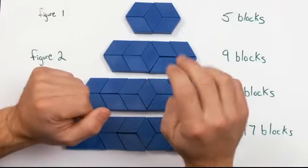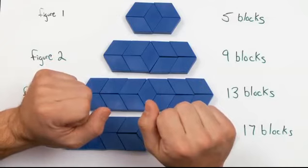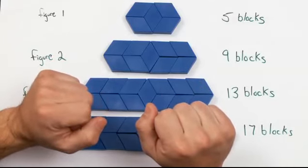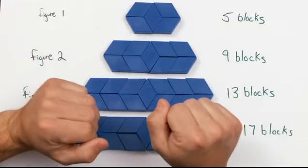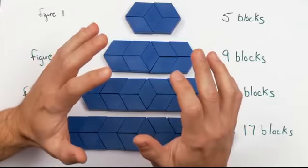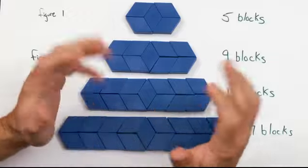Now, that's good for the first 4 figures. But what if I want to know the 75th figure? How many pattern blocks would be in the 75th figure? I don't have enough blue blocks to make all the figures between the 4th figure and the 75th figure. Can I write my rule in a different way so that I can use it to make predictions about any figure?